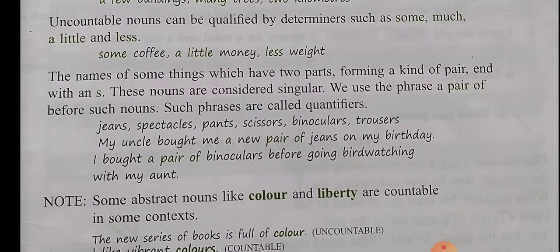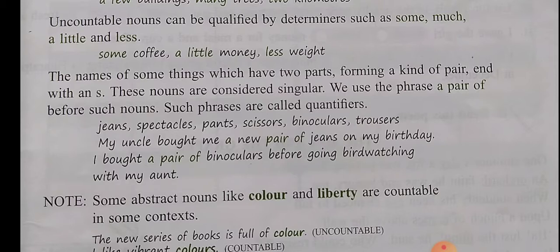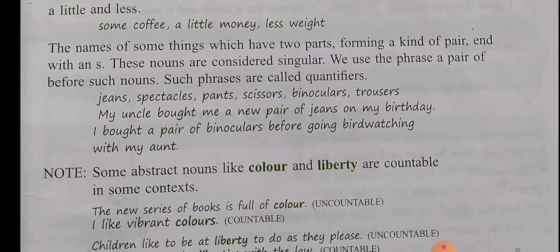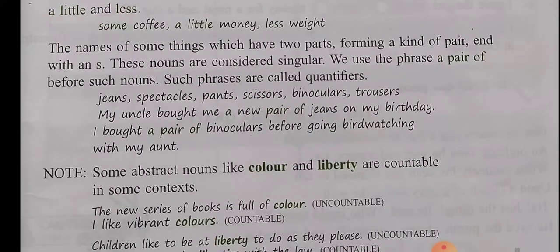The names of some things which have two parts forming a kind of pair and end with an S — these nouns are considered singular. We use the phrase 'a pair of' before such nouns. Such phrases are called quantifiers. A pair of jeans, a pair of spectacles, a pair of pants, a pair of scissors, a pair of binoculars, a pair of trousers. For example, my uncle bought me a new pair of jeans on my birthday. I bought a pair of binoculars before going bird watching with my aunt.